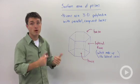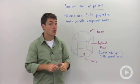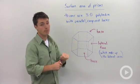A prism is a three-dimensional polyhedron, or if we're going to use the plural, we're going to say polyhedra, which means more than one polyhedron, with parallel congruent bases.